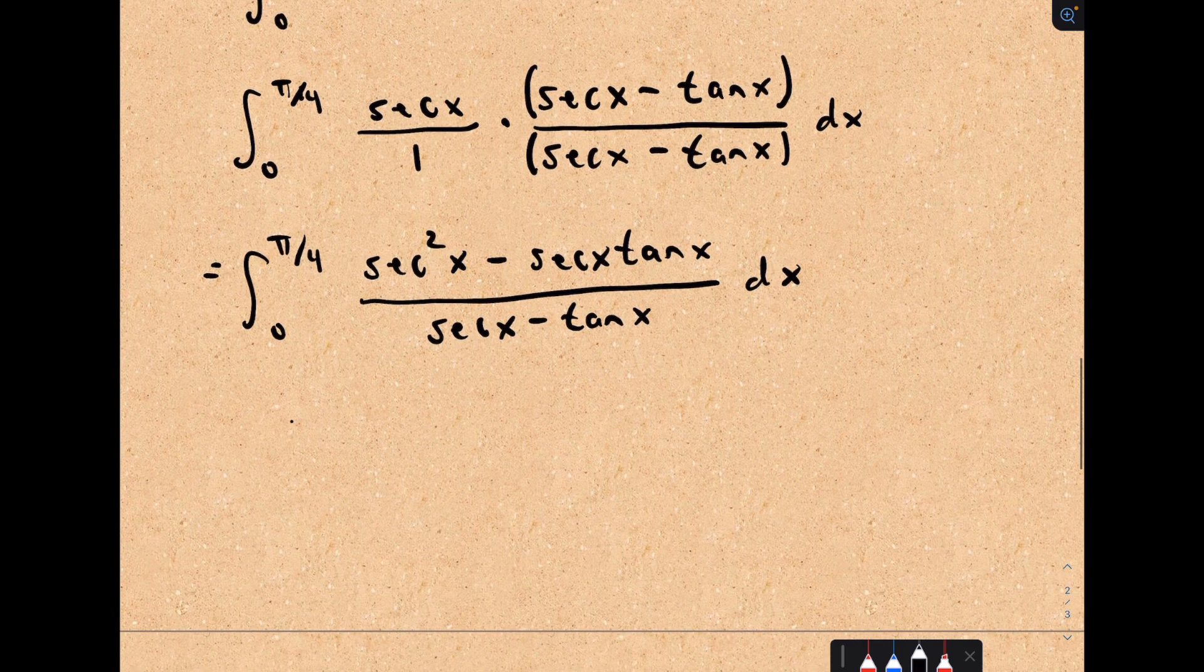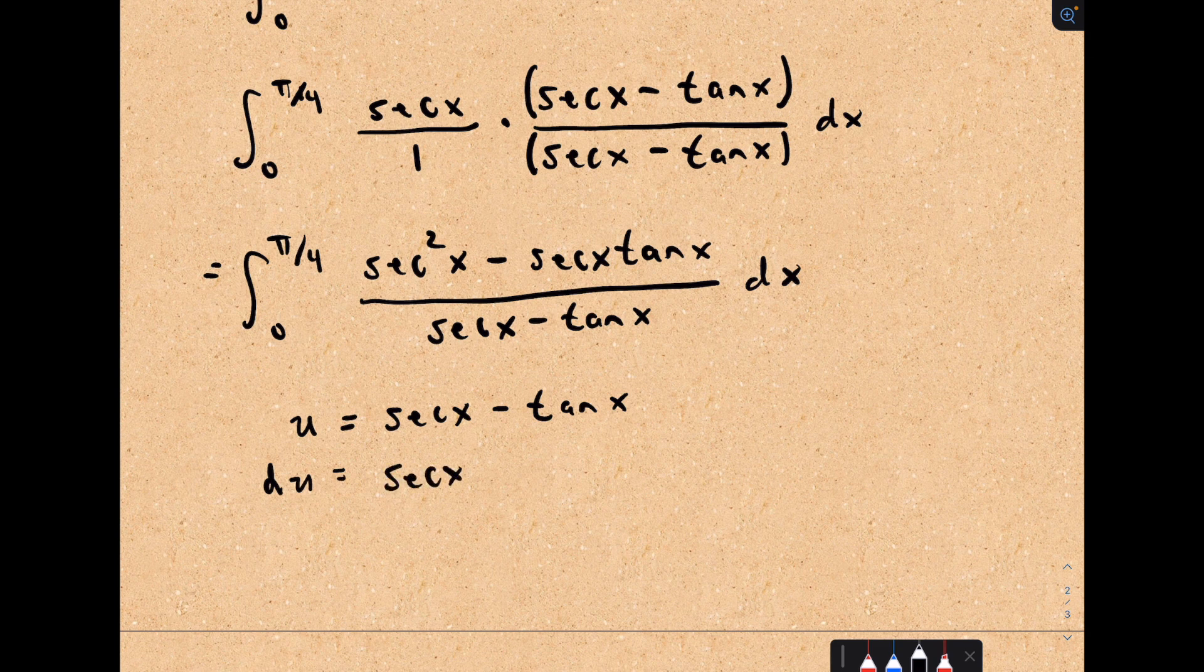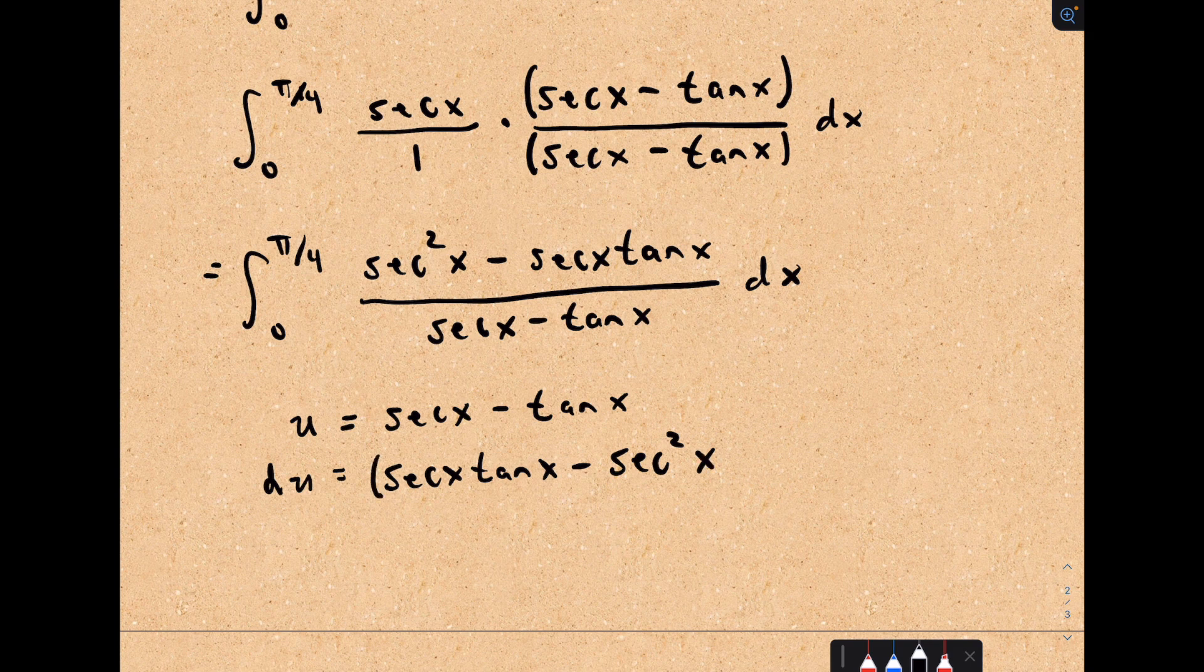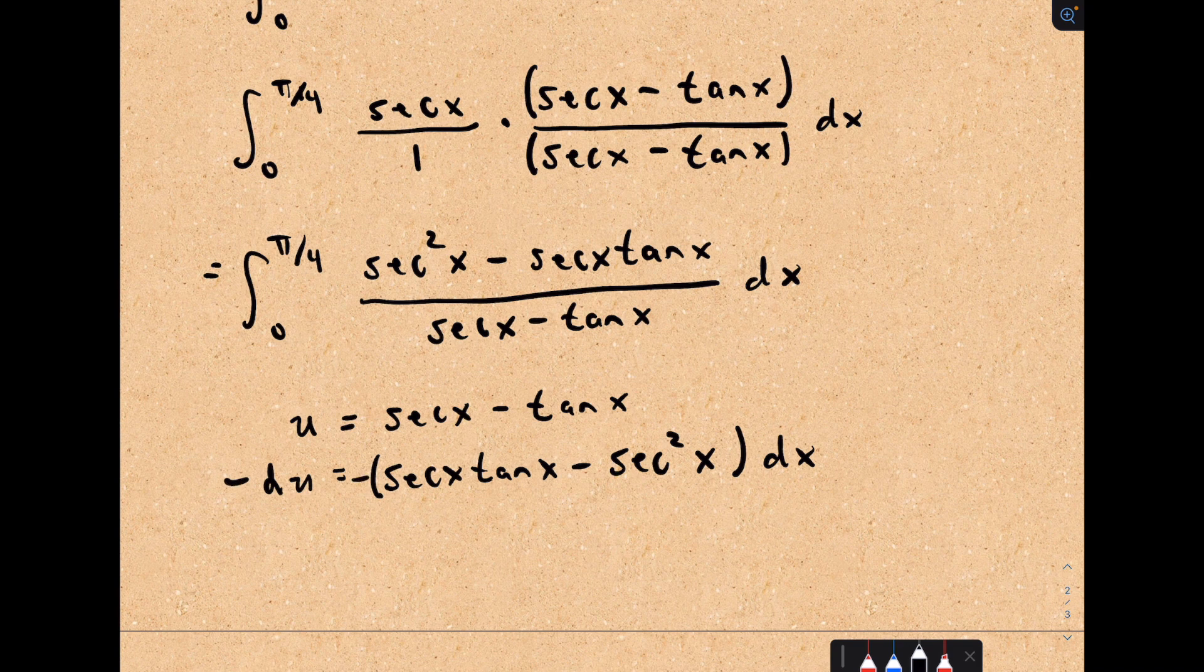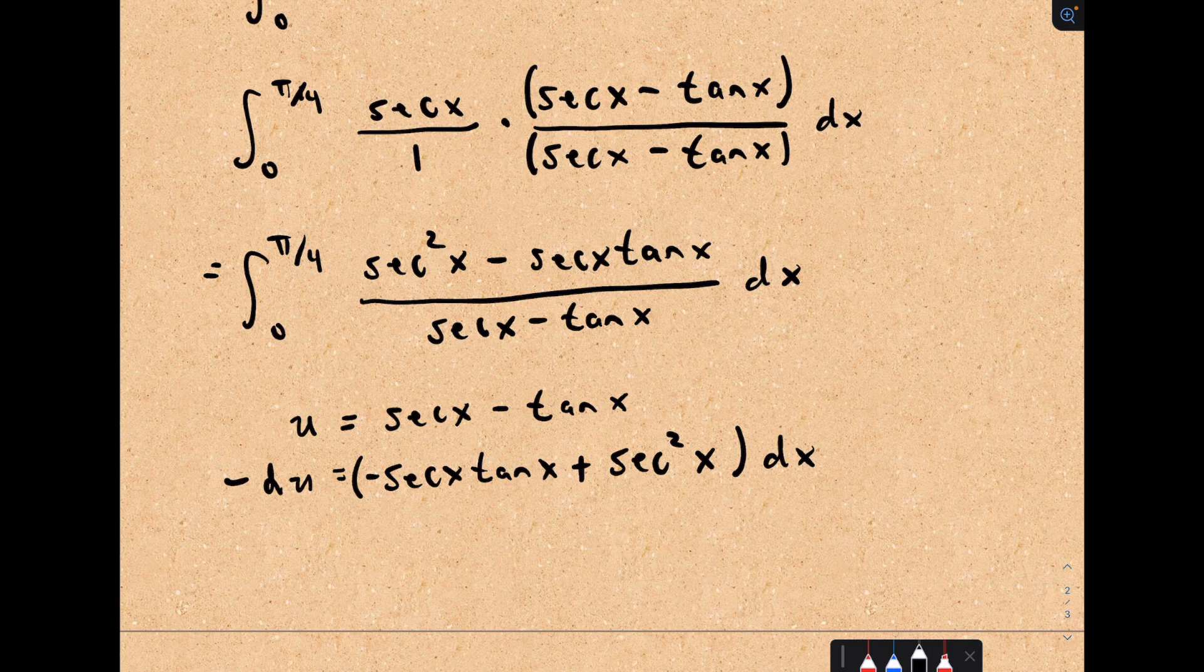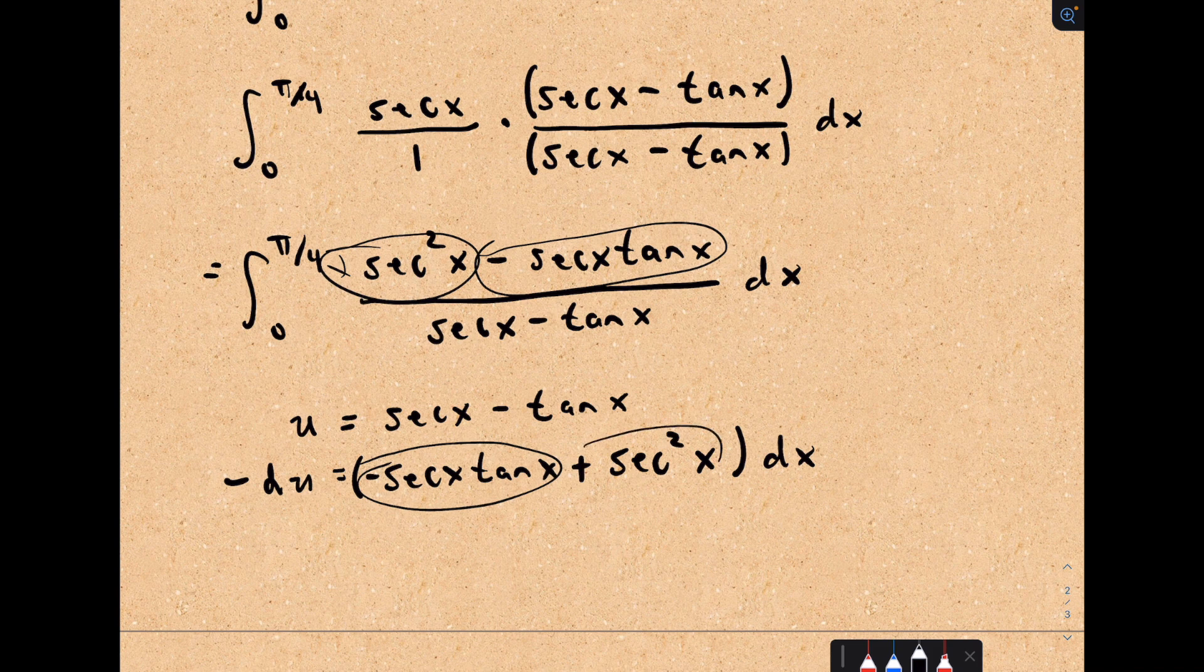Well, I'm going to use a u-substitution. I'm going to let u equal the denominator, secant of x minus tangent of x. In this case, my du is going to be, the derivative of secant x is secant x tangent x, and the derivative of tangent x is secant squared x dx. Notice that's almost what we have in the numerator. In the numerator, it's just the signs are flip-flopped. I could multiply both sides by a negative. On the right side, I'll have negative secant x tangent x plus secant squared of x dx. I've got my negative secant of x tangent x, that's right here, my plus secant squared, that's that part, my dx. So everything's going to get replaced rather nicely here.